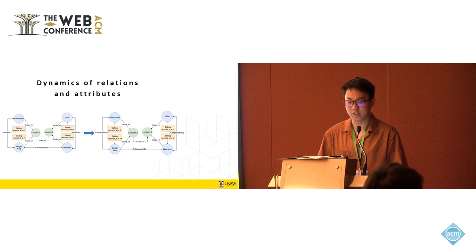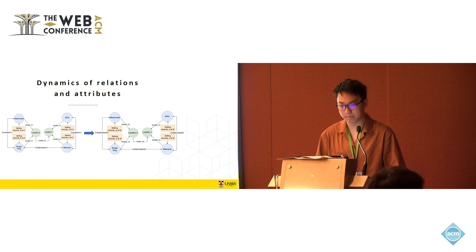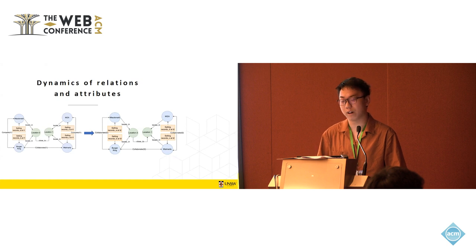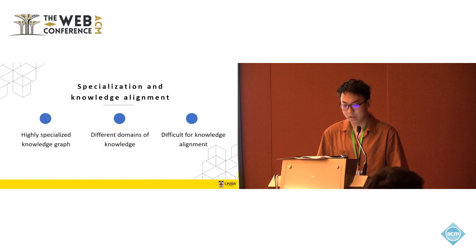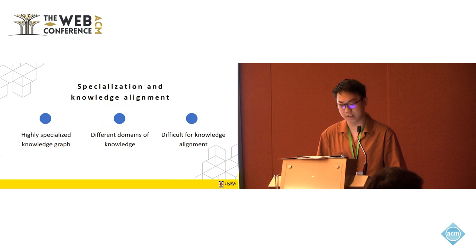And the third one is the relationship between entities. As I said, the relationships and attributes of the entities are constantly evolving. Factors like the status of the source are fluid and require frequent updates to the graph. And at last, most knowledge graphs are highly specialized, focusing on specific domains. This specialization makes knowledge alignment across different domains very challenging.